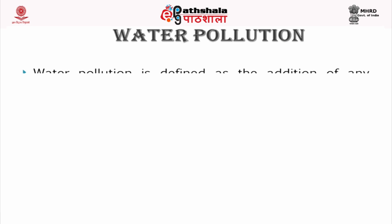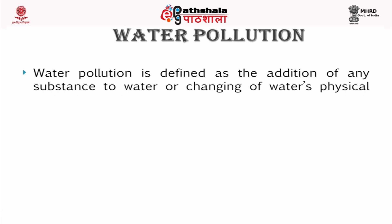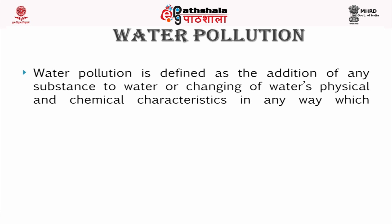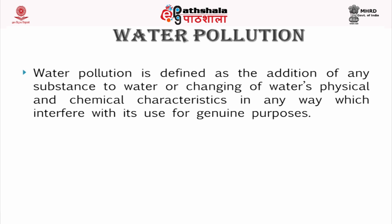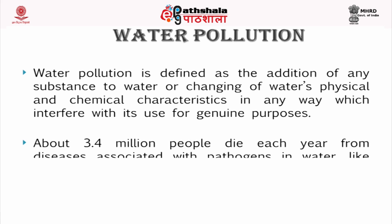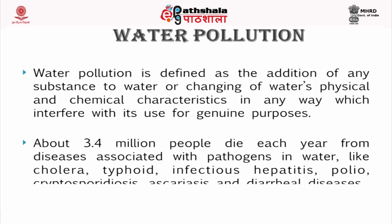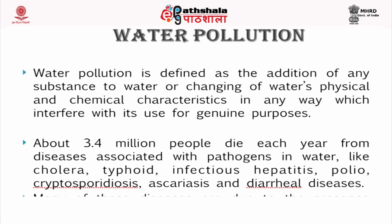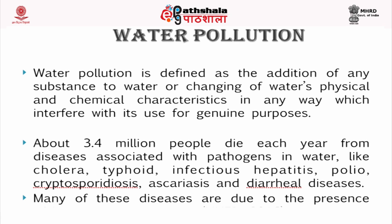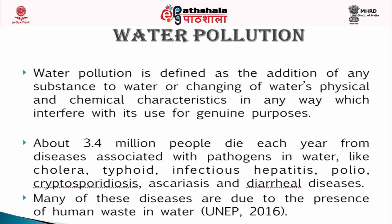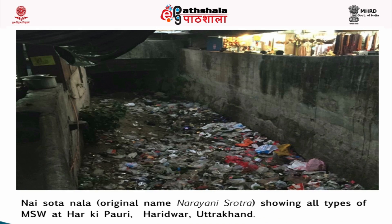Water pollution is defined as the addition of any substance to water, or changes in water's physical and chemical characteristics in any way which interferes with its use for legitimate purposes. About 3.4 million people die each year from diseases associated with pathogens in water, like cholera, typhoid, infectious hepatitis, polio, cryptosporidiosis, ascariasis and diarrheal diseases. Many of these diseases are due to the presence of human waste in water. This is the example of Nais Otanala, also known as Narayani Srotra in Haridwar, which carries all sorts of municipal solid waste and water pollutants into the holy river Ganges.